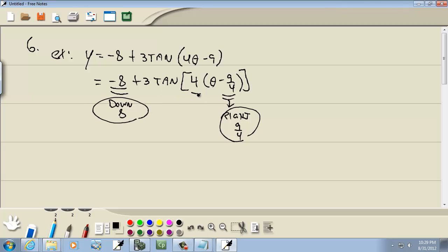Then, this right here is our B. And remember the period for tangent is pi over B. So we'll have pi over 4.